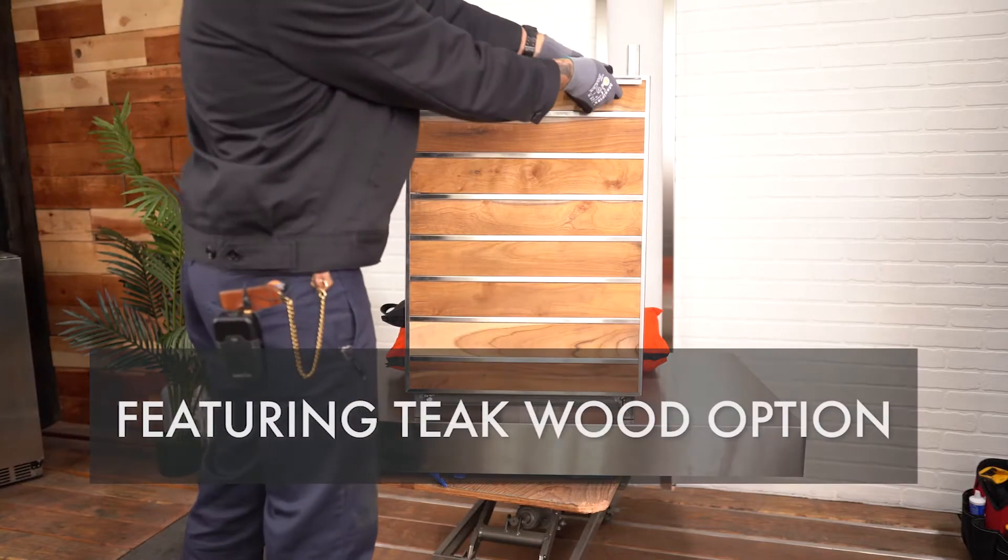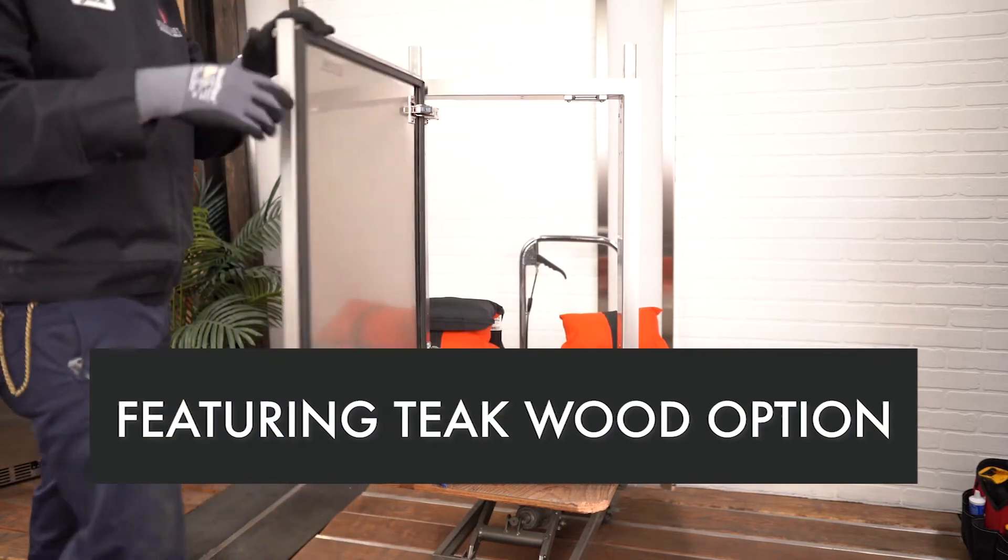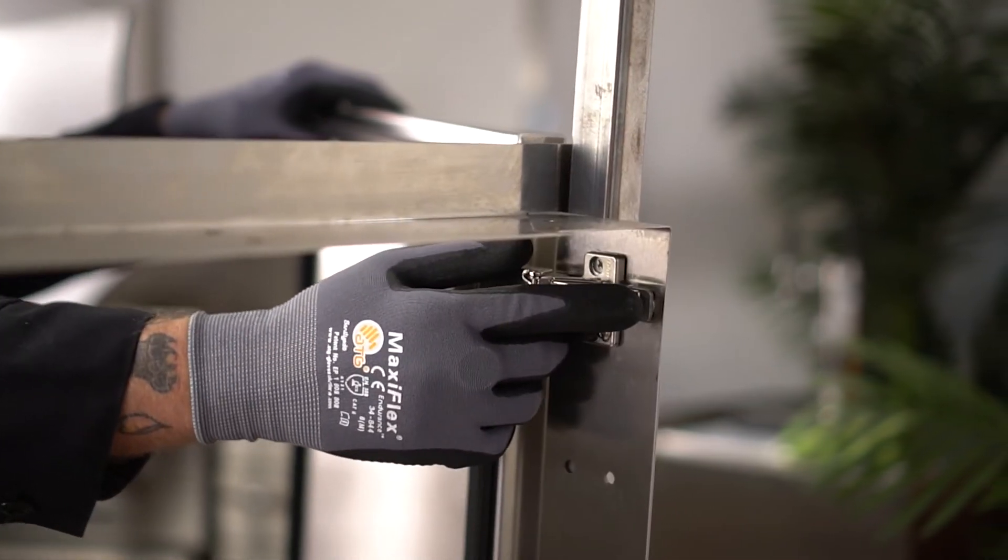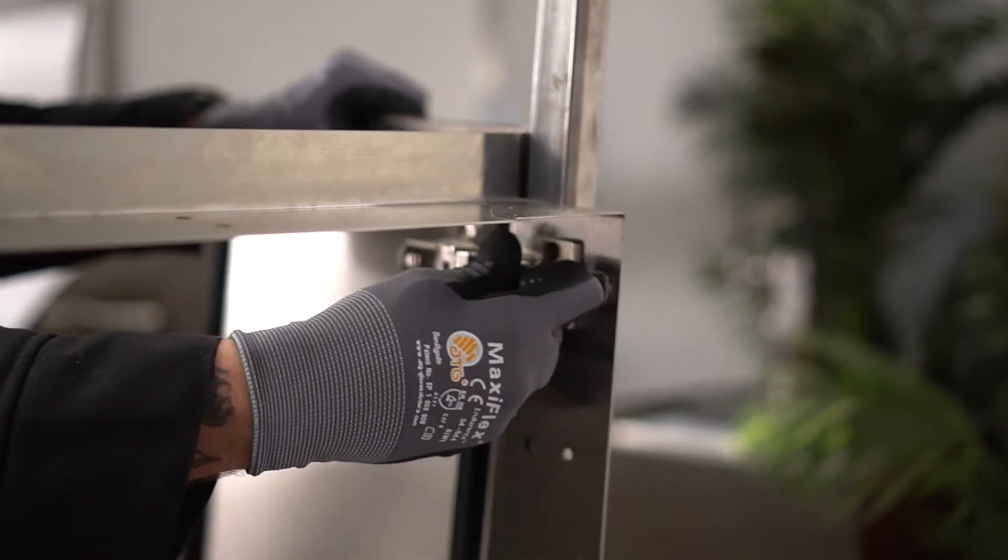For Madera doors, locate the hinges and find the small clip on the back of the hinge. Unclip the top one, making sure to hold onto the door, and then unclip the bottom one.